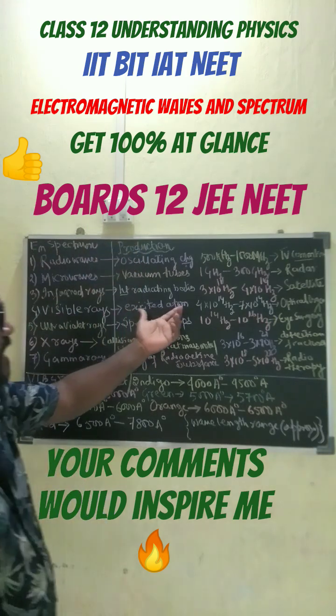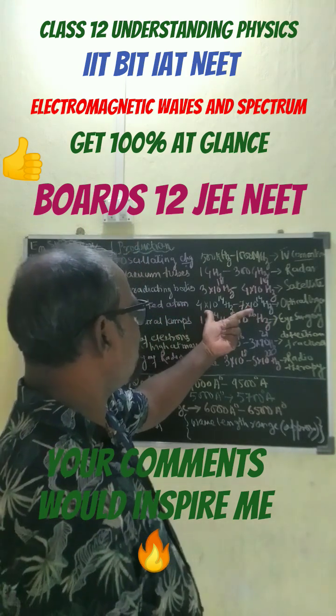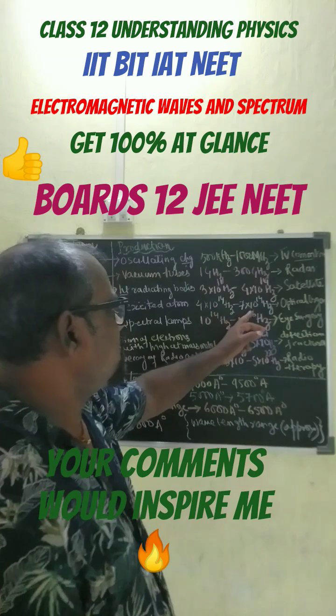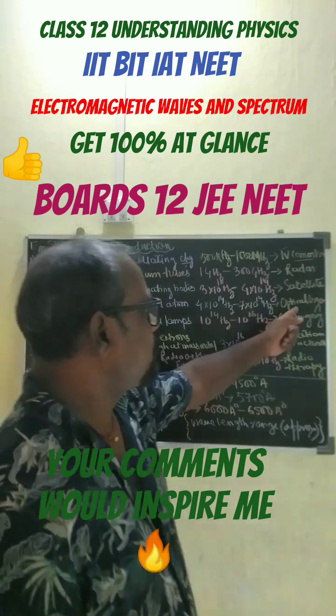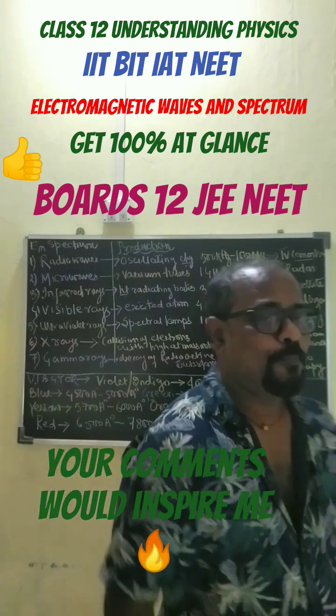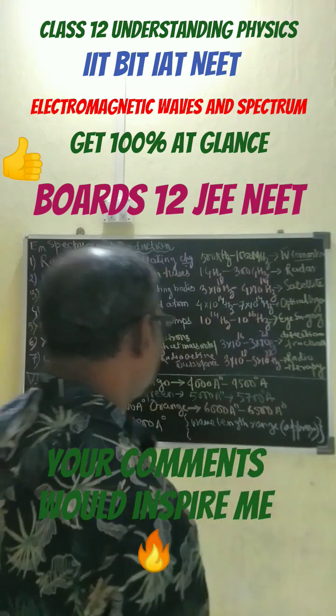Visible rays are produced through excited atoms, having a frequency range of 4×10¹⁴ Hz to 7×10¹⁴ Hz, and they are used in optical organ systems.